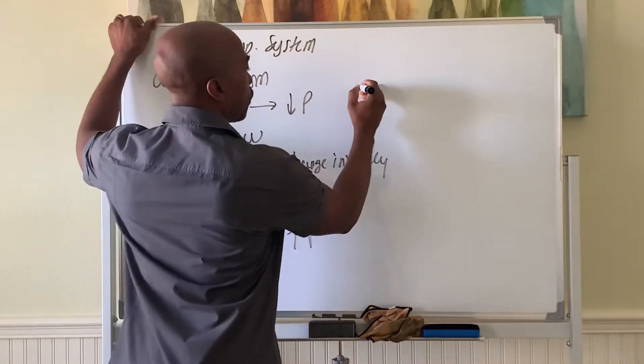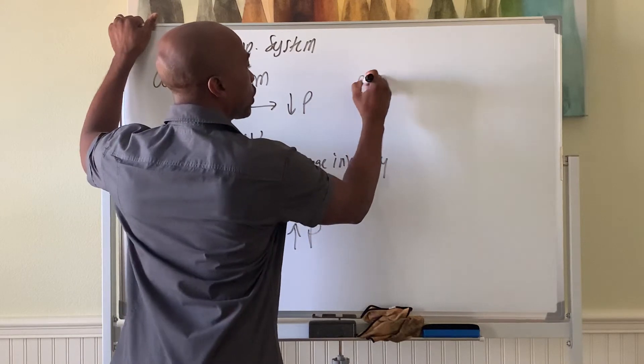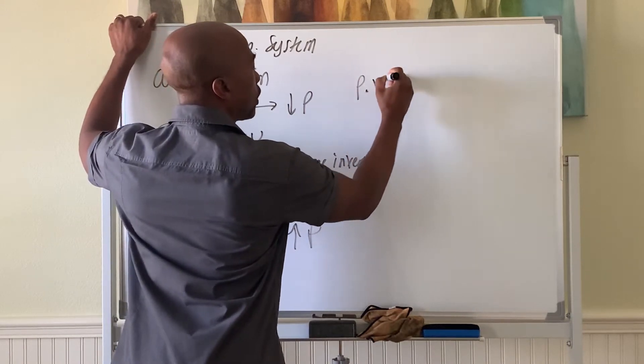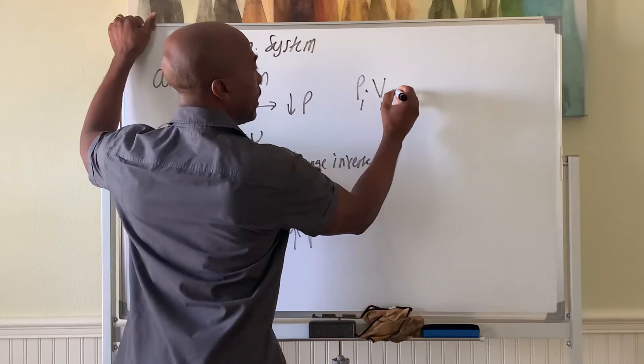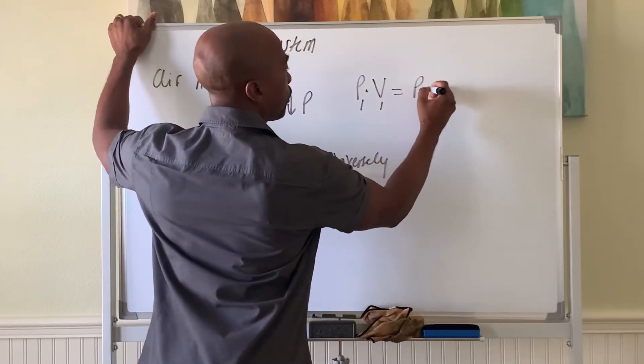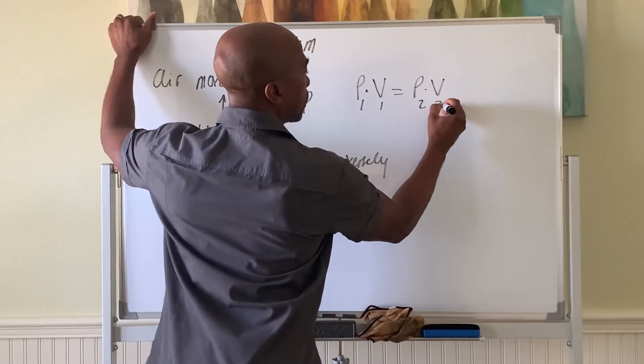Normally it's written this way. So in any closed system, pressure times the volume at condition 1 must equal to the pressure times the volume at condition 2.